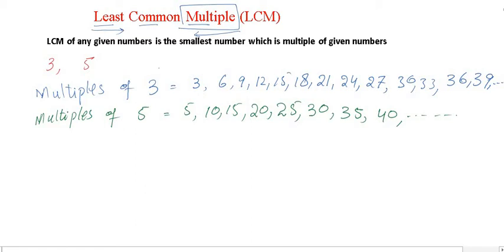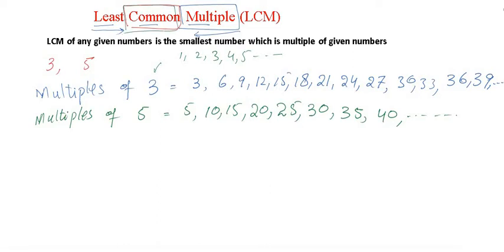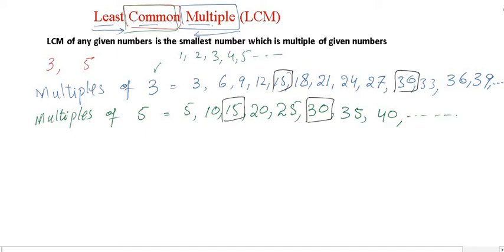What we did is multiply 3 by the natural numbers 1, 2, 3, 4, 5, and so on. Similarly, we multiplied 5 by natural numbers as well. These are the multiples of 3 and 5. Now, looking at both lists, we need to find what is common between them. The common multiples between 3 and 5 are 15 and 30.